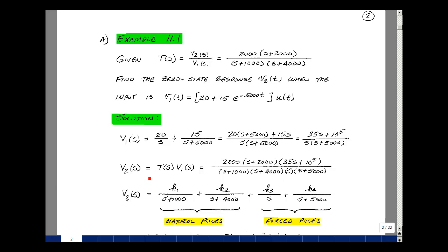Function V2(s) would then be T(s) times V1(s). Take this V1(s), which is right here, and multiply it by our T(s), which is right here. We'll have four poles. We have one at s plus 1,000, s plus 4,000. Those are my natural poles. And then my force poles are going to be from right here. They're going to be s and s plus 5,000. We've got four residues to find.